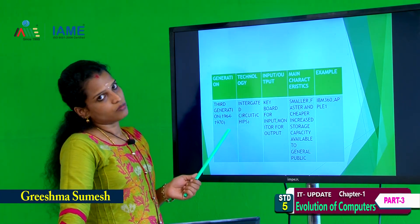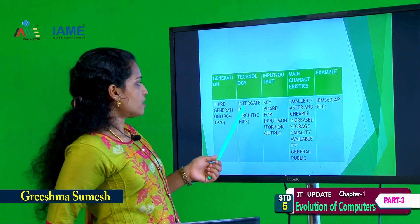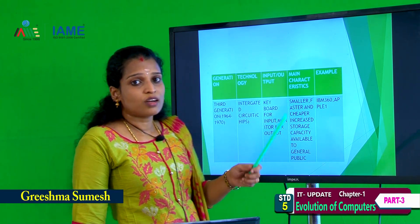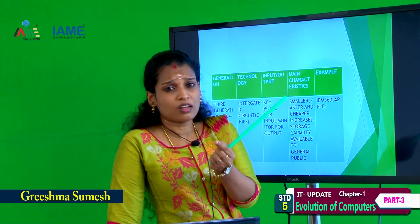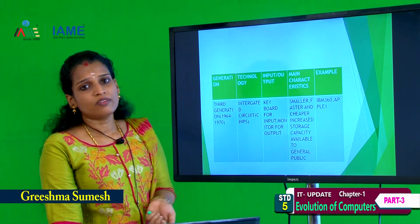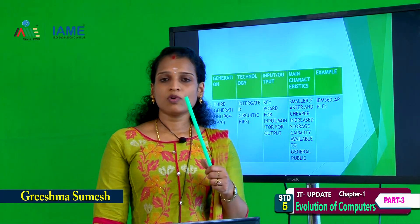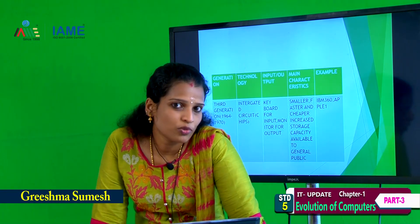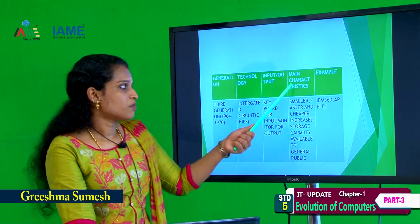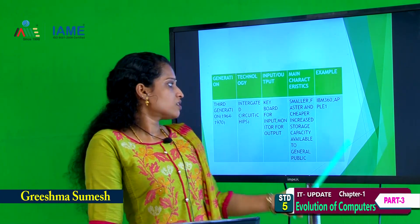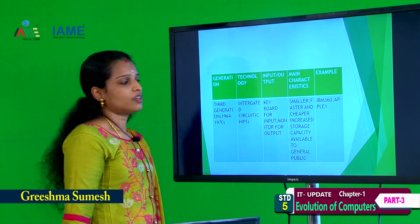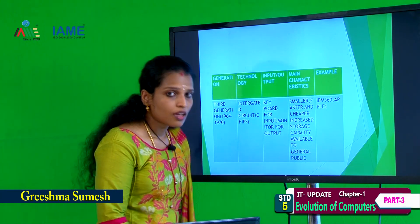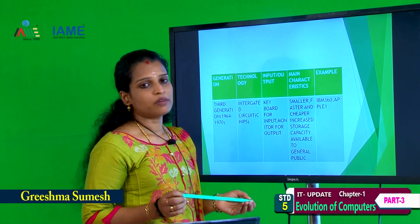Third generation computer, 1964 to 1970. Integrated circuits are used — small chips. Input device: keyboard; output device: monitor. Changes came for the third generation computer. Main characteristics: smaller, faster and cheaper. Increased storage capacity, available to the general public. Examples: Apple 1, IBM 360.